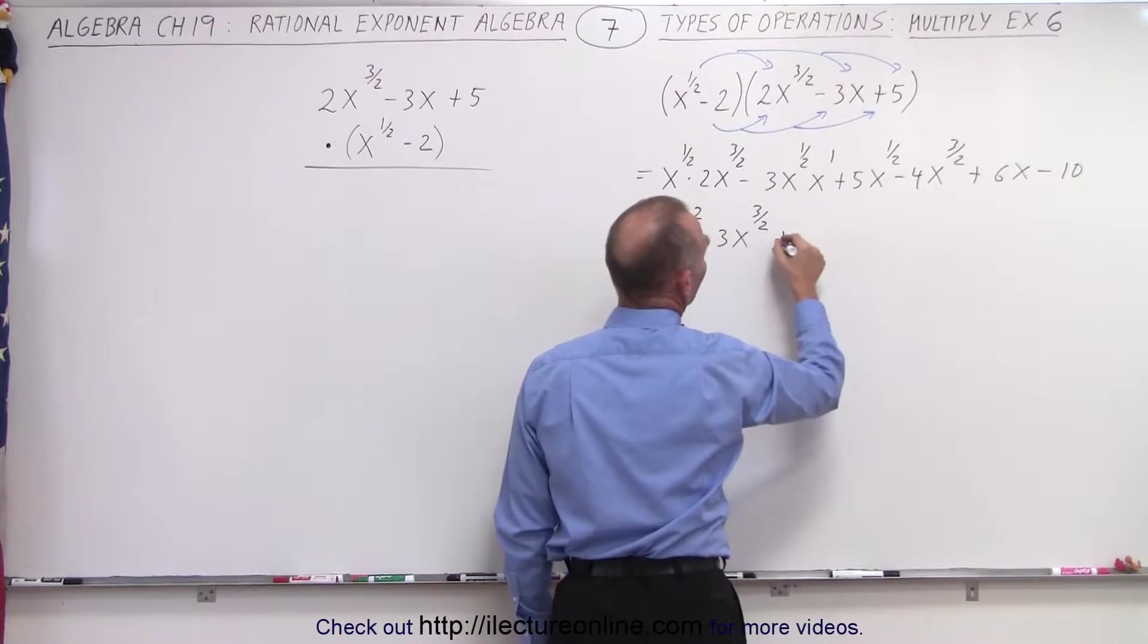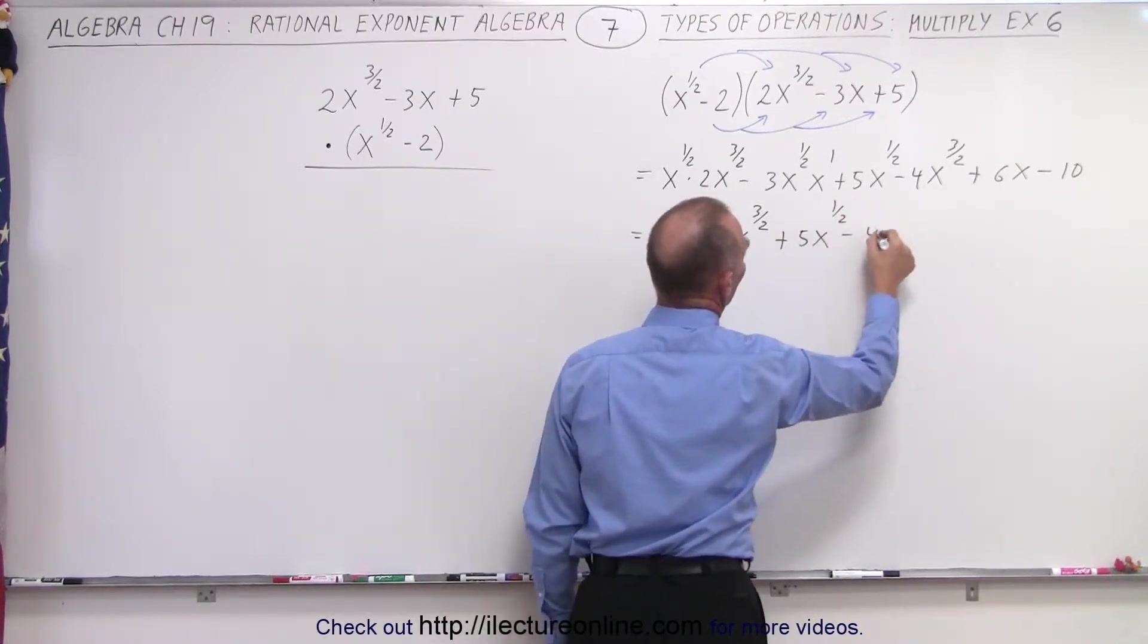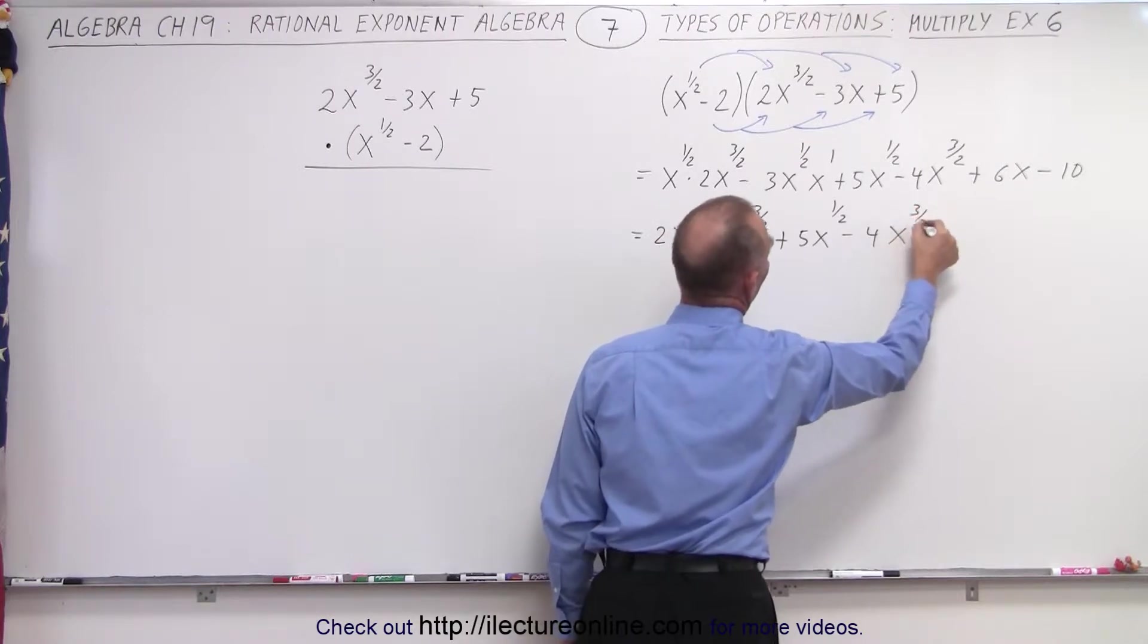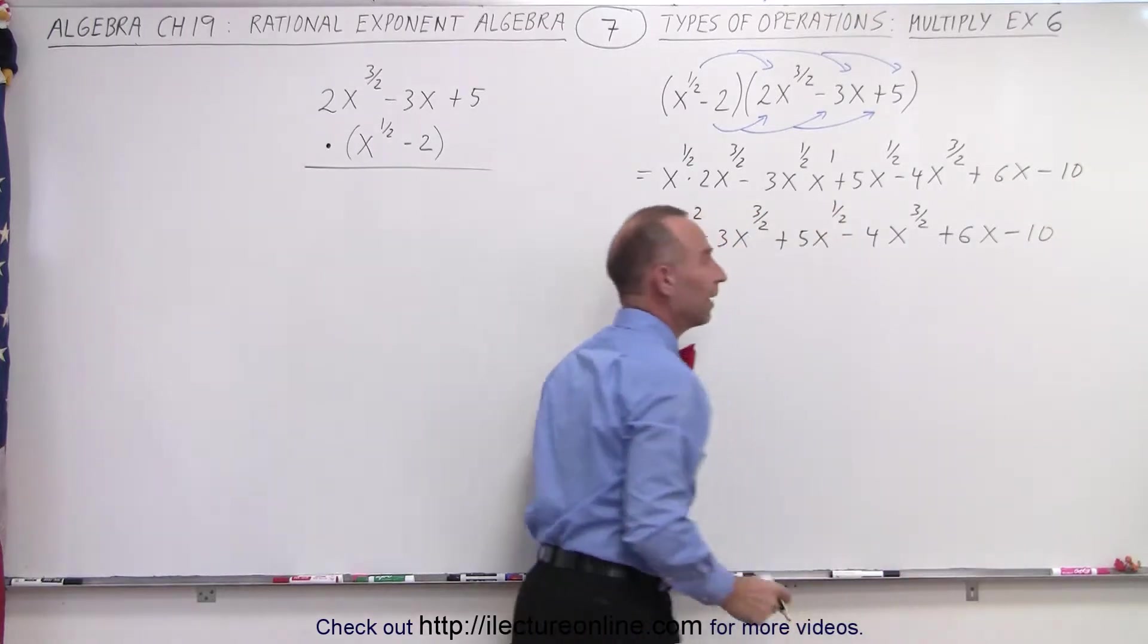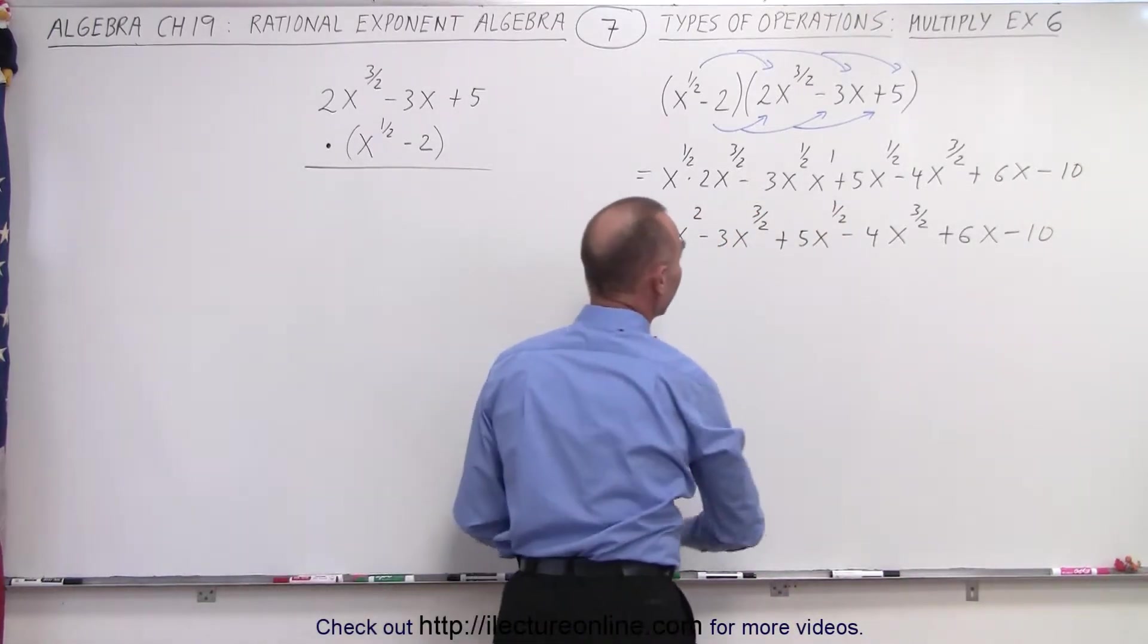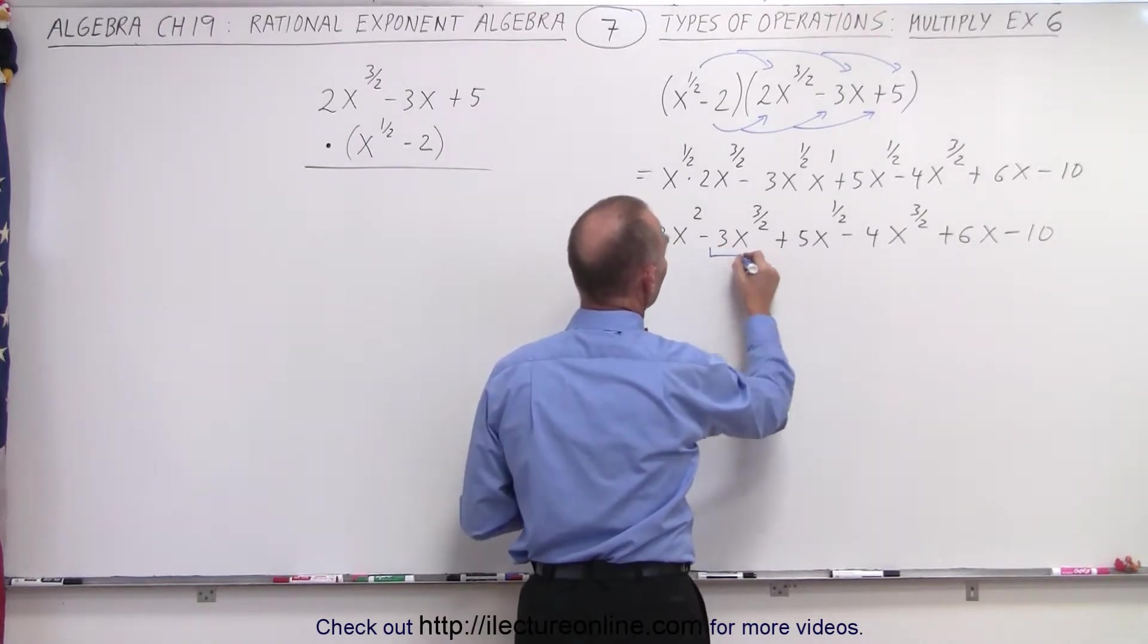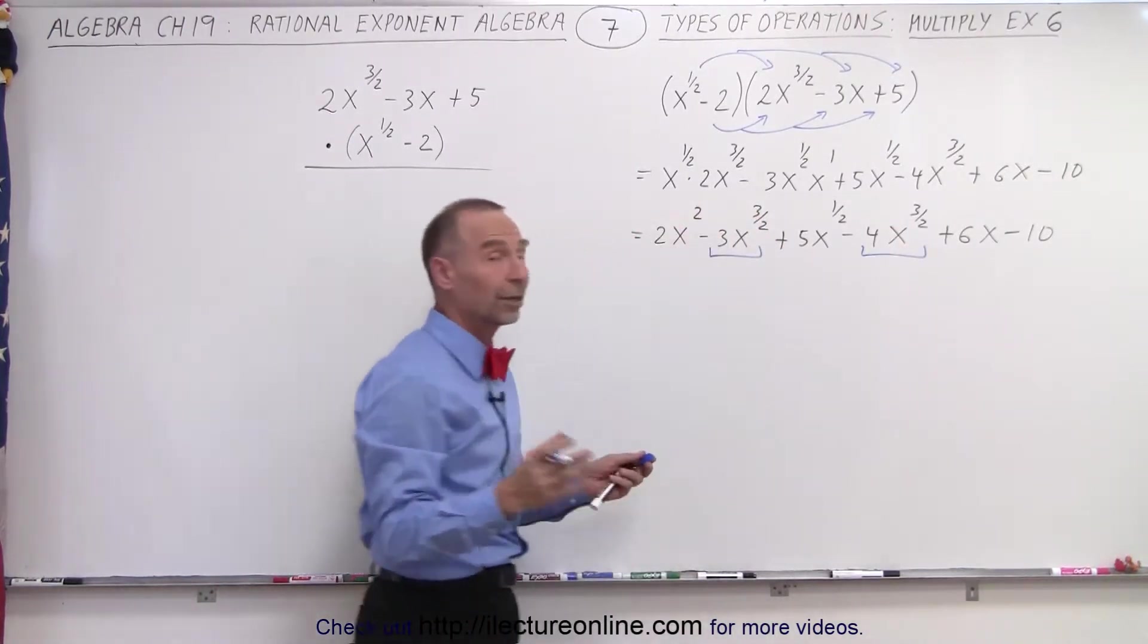Here we get plus 5x to the 1 half power, minus 4x to the 3 halves power, plus 6x to the first power, minus 10. Now we're ready to look for common terms, and sure enough, there's a pair. We have this one here, which is x to the 3 halves. We have this one here, which is x to the 3 halves, so we can combine the two.